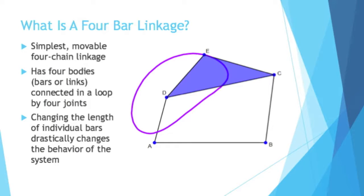What is a four-bar linkage? A four-bar linkage is the simplest movable four-chain linkage. It has four bodies, which are typically referred to as bars or links, connected in a loop system by four joints. Now the fun comes if you change the length of individual bars, this can drastically change the behavior of the system.